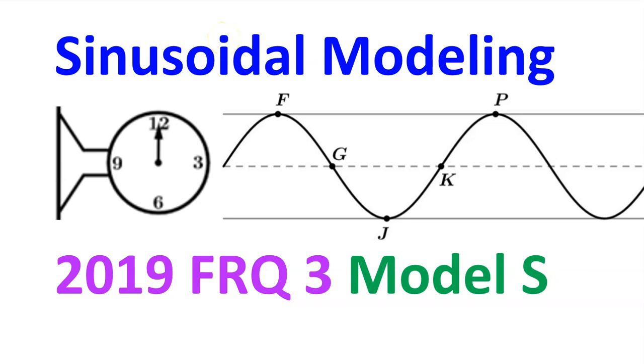There will be four free response questions on the AP exam. This video is modeled after FRQ number three. It's about modeling real-life situations using a sine function or a cosine function. Let's pretend it's from the 2019 exam. If you appreciate this content, please give it a like.